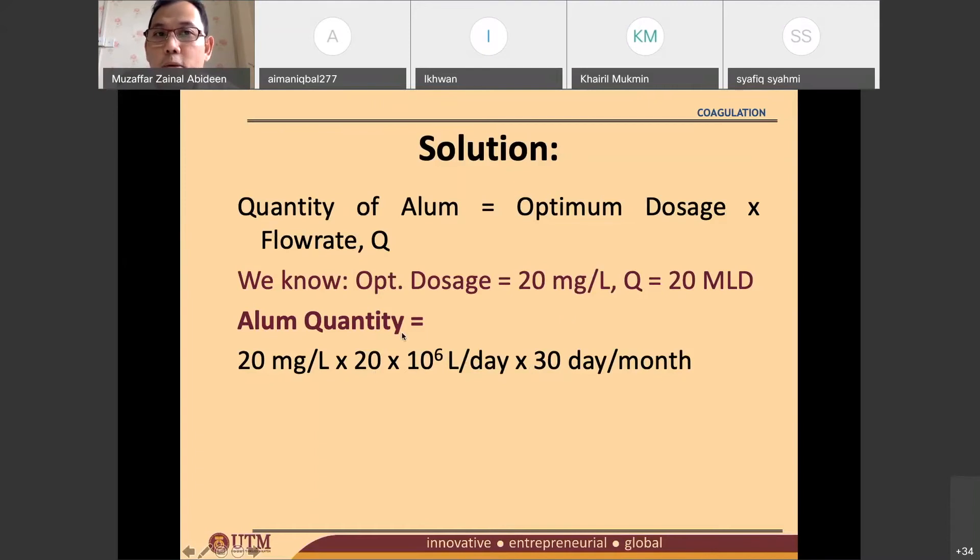And don't forget, they were asking you on the amount of alum in a month. So we have to assume that one month is 30 days. So day will cancel with day, liter will cancel with liter. You will get the answer in mg per month. 1 mg is a very small number. You've got millions of mg. So perhaps changing it to kilogram would be better.